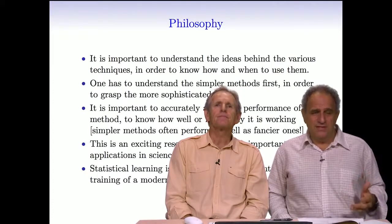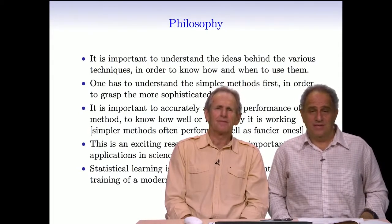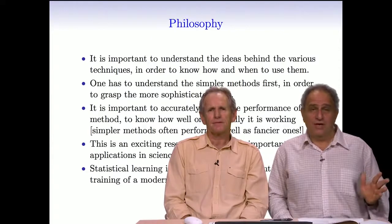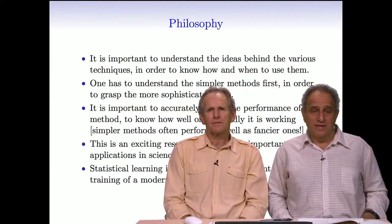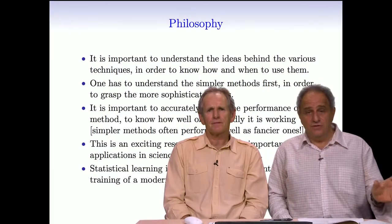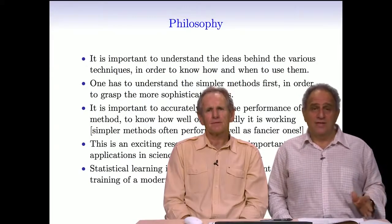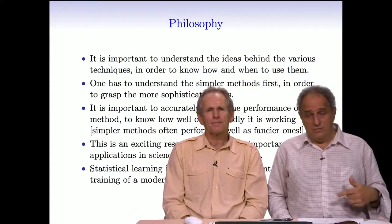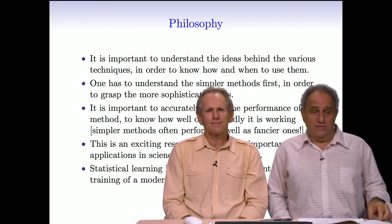You might be wondering where the term supervised learning comes from. It's actually a very clever term. The idea comes from the kindergarten analogy of a teacher trying to teach a child to classify — to discriminate between, say, a house and a bike. The teacher shows the child examples of what a house looks like and examples of what a bike looks like. The child then learns that a house has square edges and a bike has more rounded edges. That's supervised learning, because the child has been given examples of labeled training observations. The Y is given, and the child tries to classify the two objects based on the features, the X's.